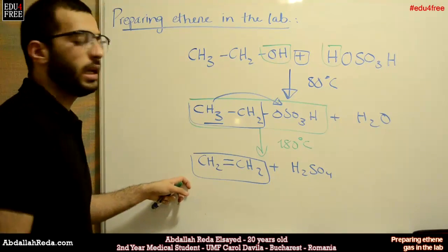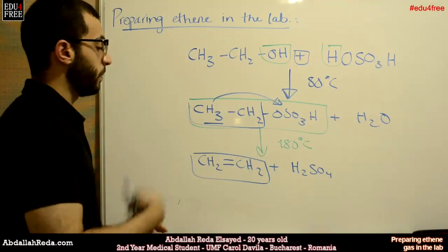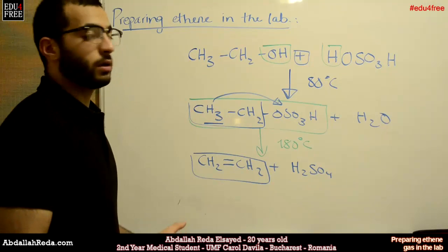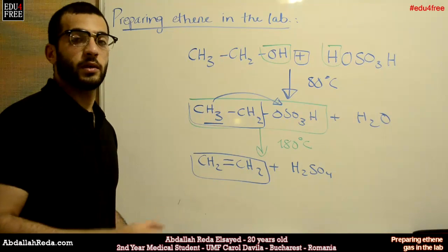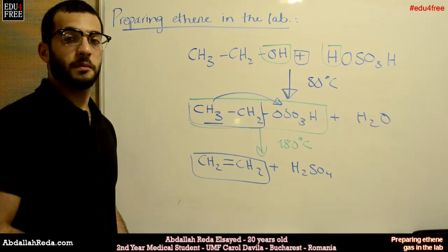So this is how ethene is formed in the lab. I hope it was easy. Next time, we'll start talking about the physical and chemical properties of alkenes. Until then, I thank you for watching, and see you.